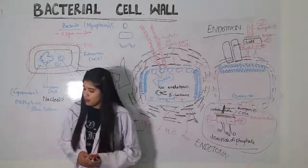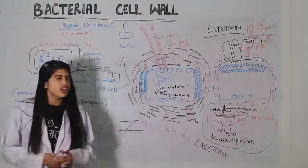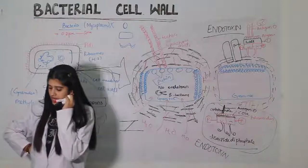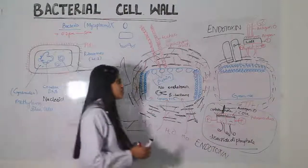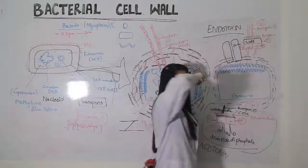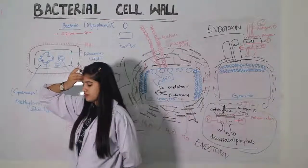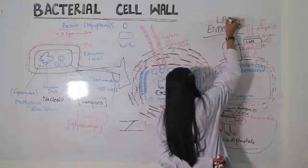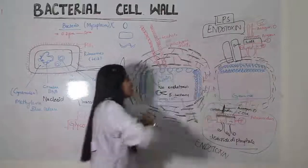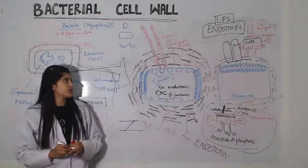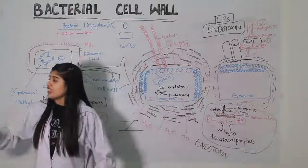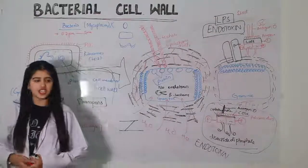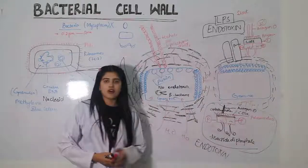The endotoxin consists of lipid A, a core, and a polysaccharide chain. Lipid A and the core are the same across bacteria; only the polysaccharide differs. Gram negative bacteria have lipopolysaccharide; gram positive bacteria do not. Due to the endotoxin, patients may undergo septic shock. This is the key difference between gram negative and gram positive bacteria regarding their outer surface.